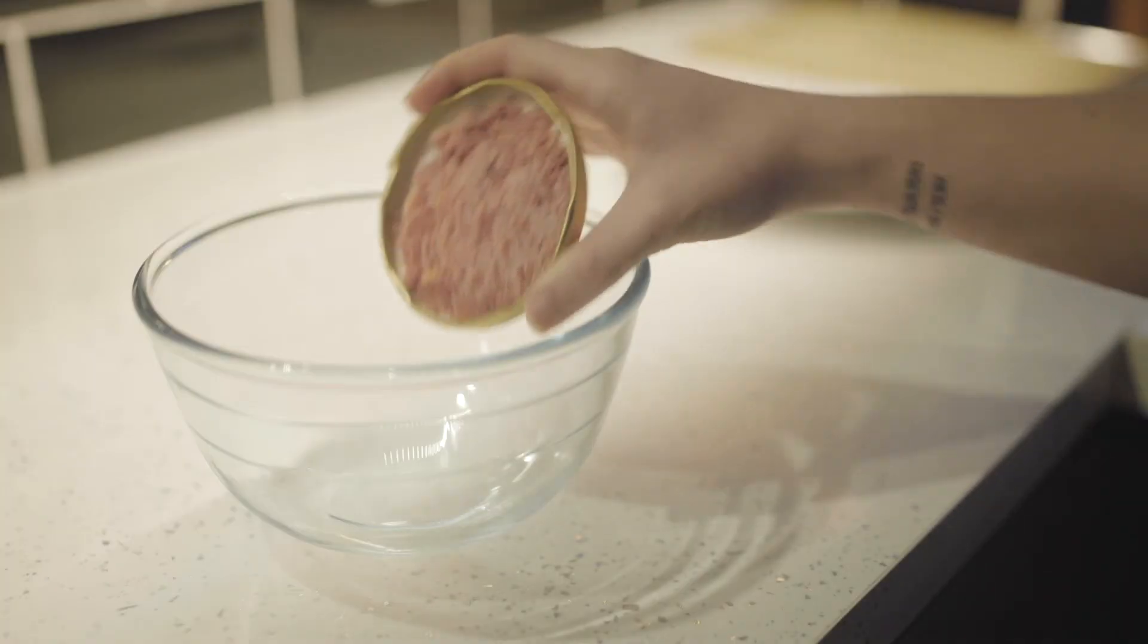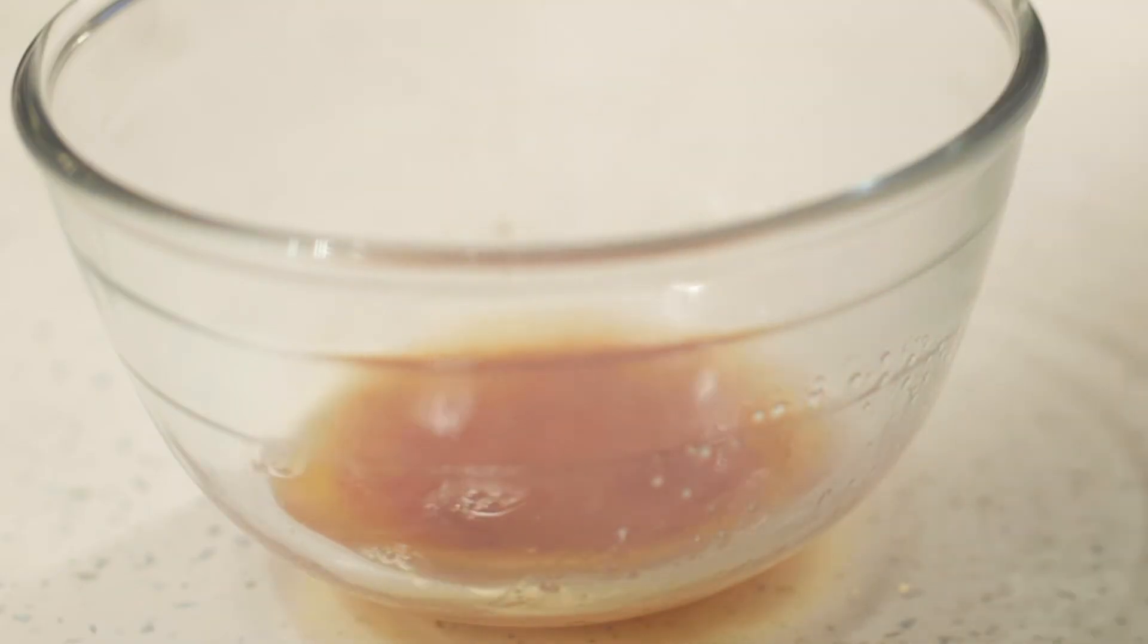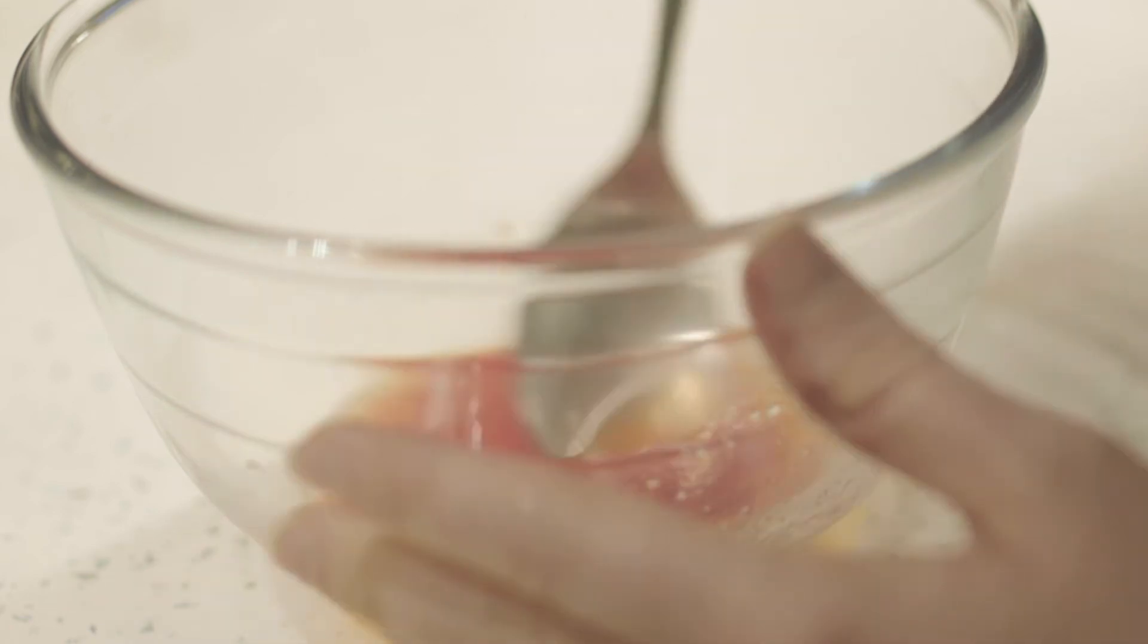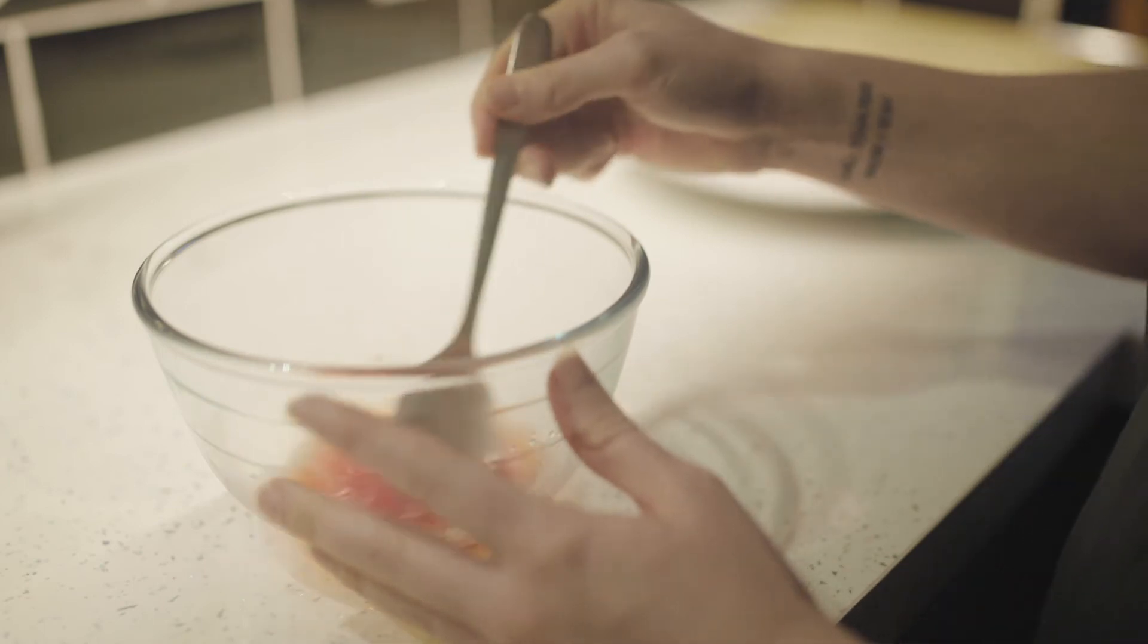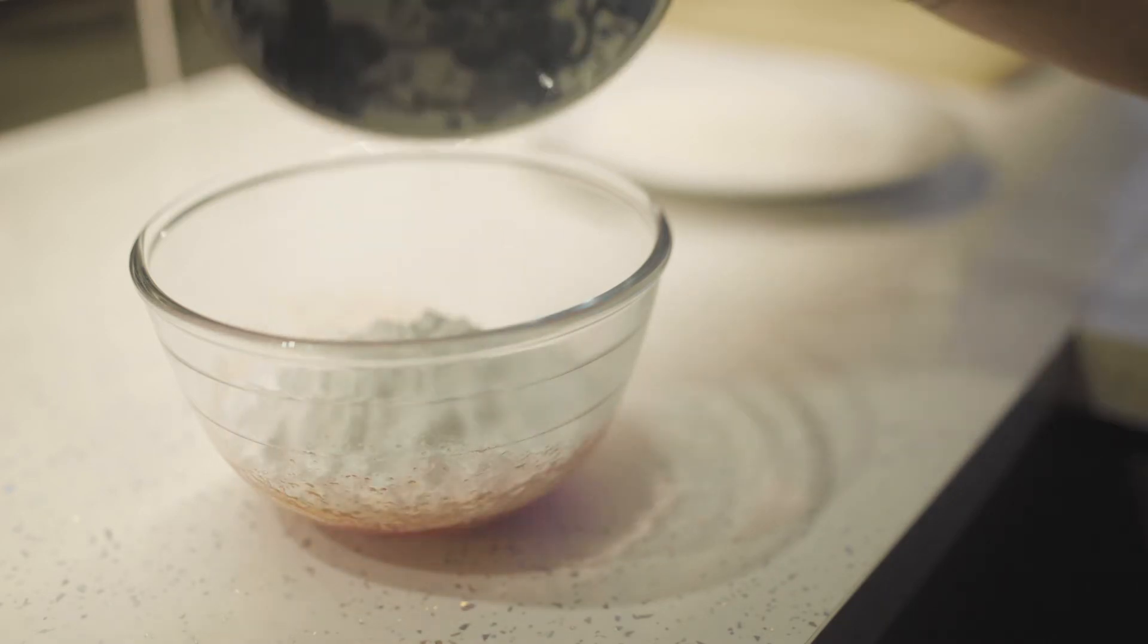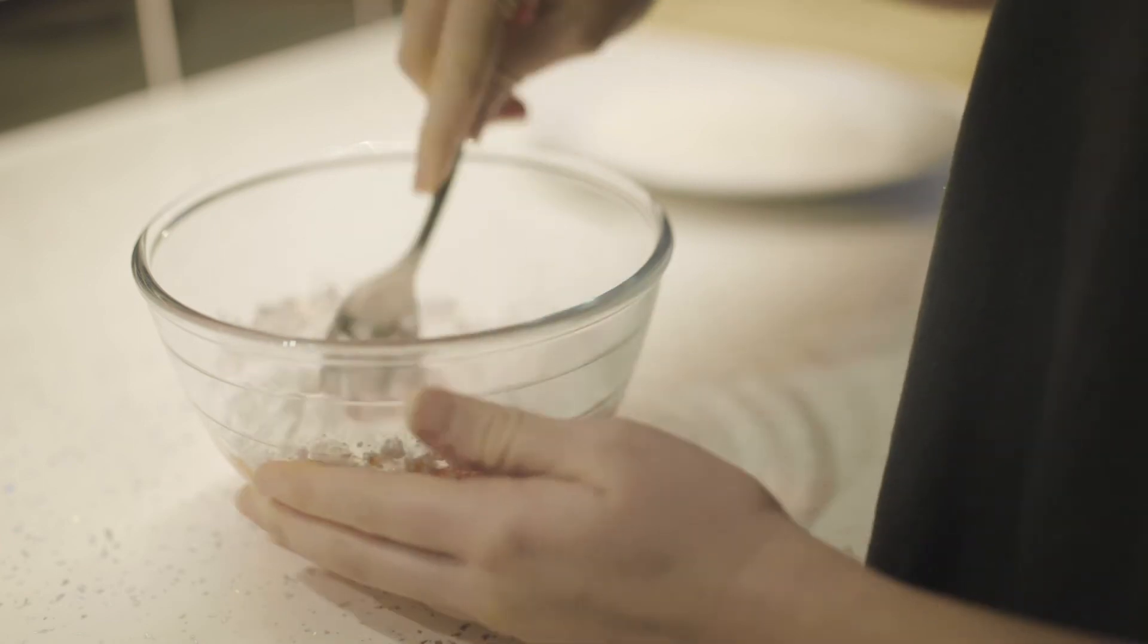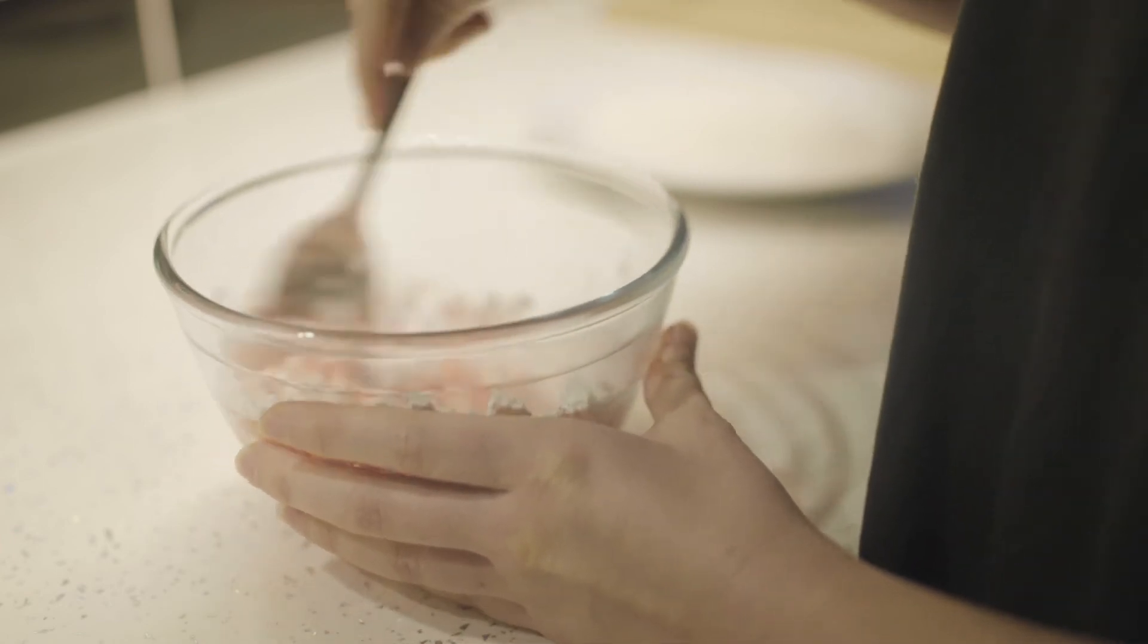To make the strawberry icing dissolve the jelly crystals in a quarter of a cup of hot water. Then add in sifted icing sugar and mix again until it's all combined. Carefully add in water until it has a crepe batter consistency, one that will be easy to dip sponges in.